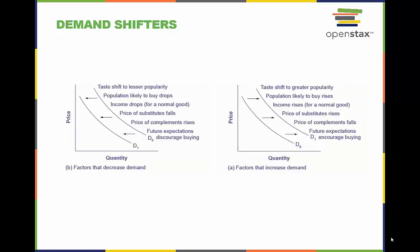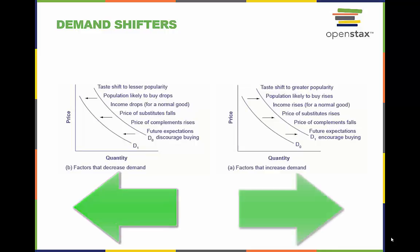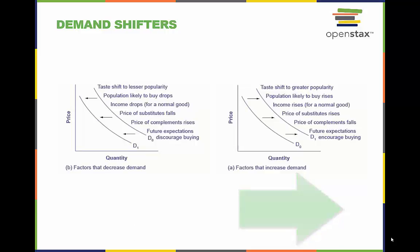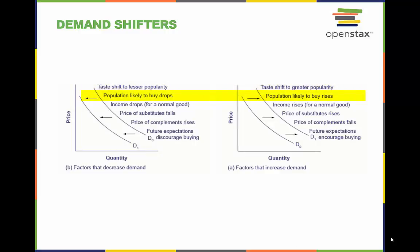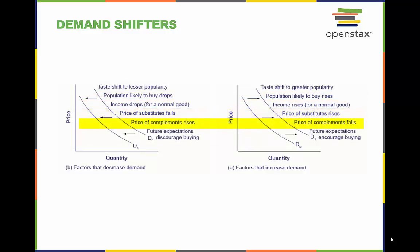Here are two lists of factors that cause either an increase or a decrease in demand. The factors on the left cause a decrease in demand and shift it to the left. The factors on the right cause an increase in demand and shift it to the right. These factors include consumer tastes, population change, income change, substitutes, complements, options, and future expectations.